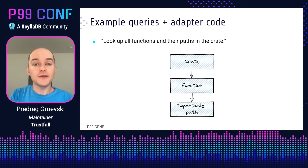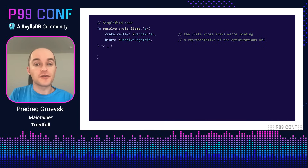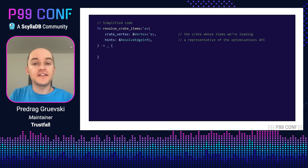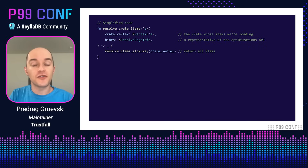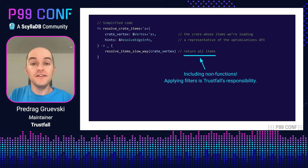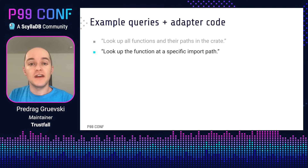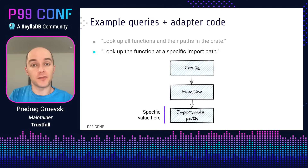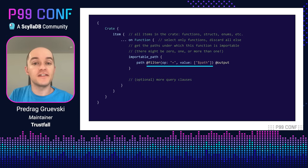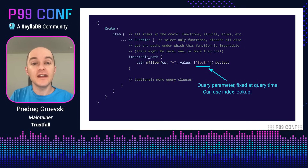That's the query sorted out. Let's look at the adapter — specifically the code for loading the items in the given crate. The adapter might have a function like resolveCrateItems, which takes two parameters: the vertex that represents the crate whose data we're loading, and a hints value that represents the optimization API. We're going to come back to that in a minute. The exact details of the RustDoc format are not relevant here, so let's assume we already have a function that loads all of the items given a crate. Even though a query is returning only functions, it's safe to return all kinds of items here — applying filters is TrustFall's responsibility, so it will take care to discard everything that isn't a function. Now let's try looking for a function at a specific import path. To do this, we just add a filter directive to our query that says the path property must be equal to this query parameter called path. Because the query parameter is fixed at query time, we can use an index lookup to speed this up.